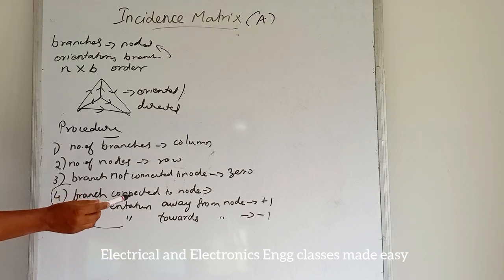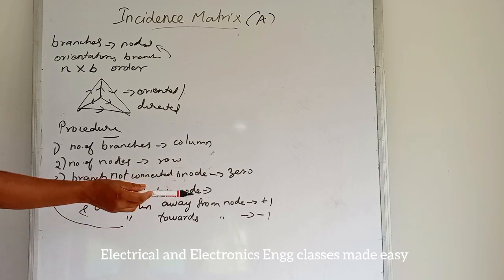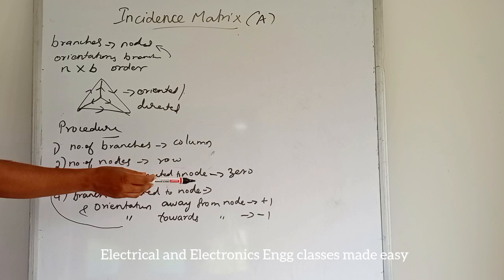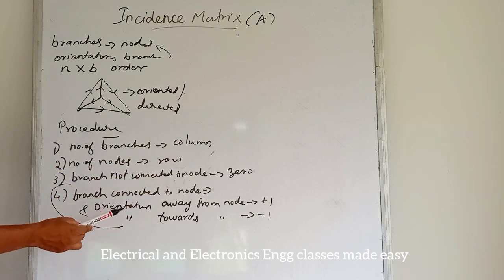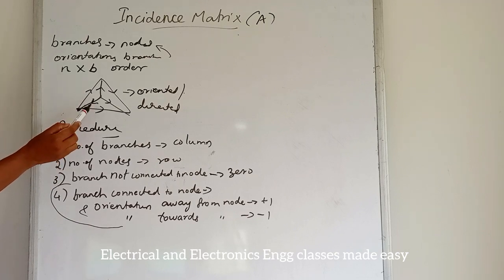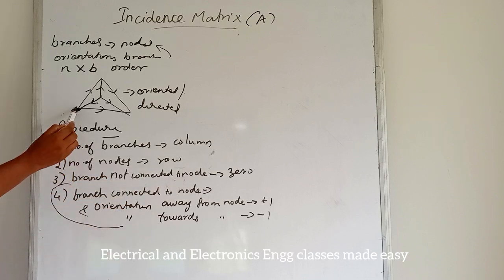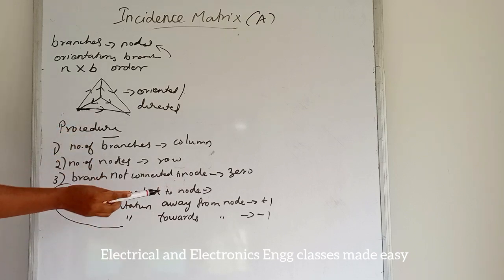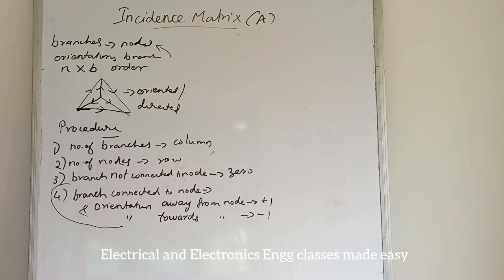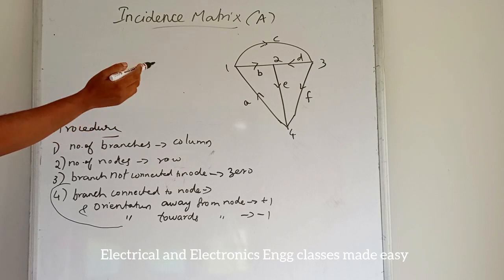To clarify: if a particular branch is connected to a particular node and its orientation is away from the node, the element is filled with plus 1. If the orientation is towards the node — for example, consider this node where the branch points towards it — that element is filled as minus 1, and away from the node is filled as plus 1.